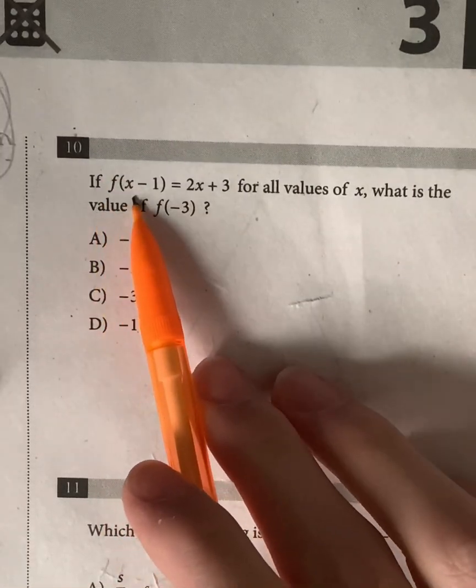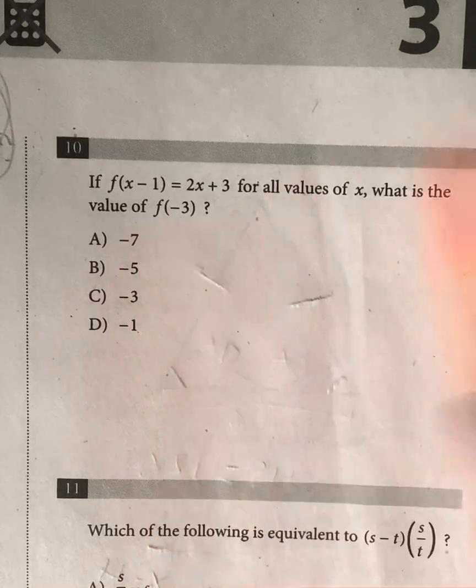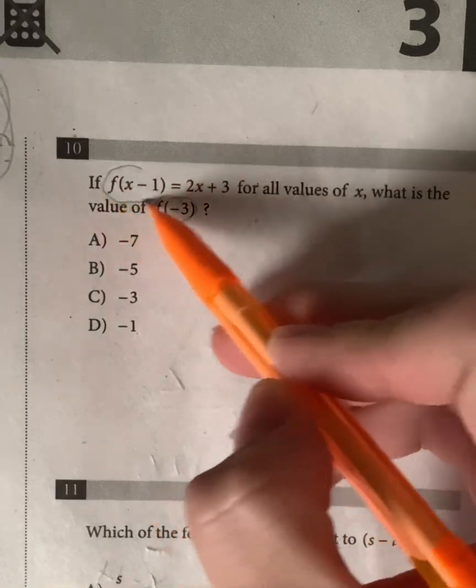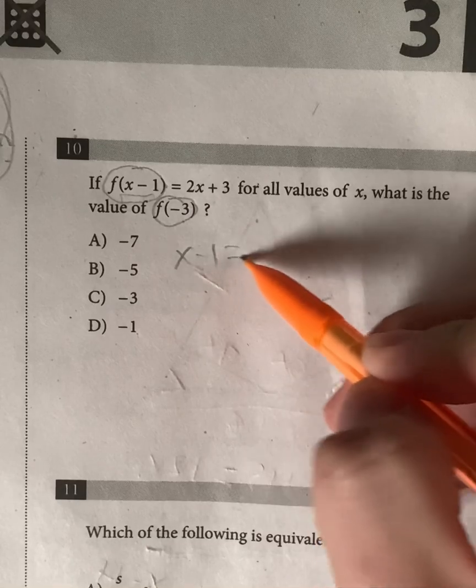So we have question 10. If f of x minus 1 is equal to 2x plus 3 for all values of x, what is the value of f of negative 3? So in order to find f of negative 3, this right there has to equal to negative 3. So let's set x minus 1 equal to negative 3.